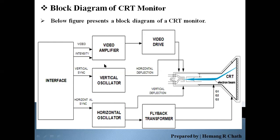The information is passed through the interface. According to that, the electronic gun emits an electronic beam towards the screen. Here is the vertical deflection plate and the horizontal deflection plate, which deflect the beam vertically and horizontally onto the screen.